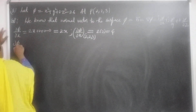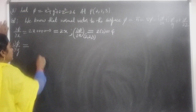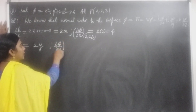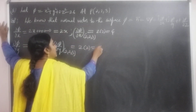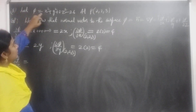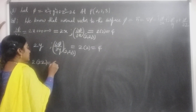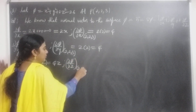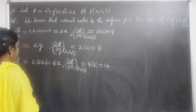∂φ/∂y = 2y (x² and z² terms give 0). At point (2, 2, 3): ∂φ/∂y = 2(2) = 4. ∂φ/∂z = 4z (derivative of 2z² is 4z, x² and y² give 0). At point (2, 2, 3): ∂φ/∂z = 4(3) = 12.